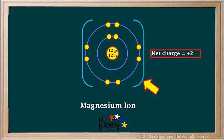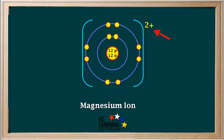When drawing Bohr models for ions, we put square brackets around the ions and write the net charge on the top right of the brackets. So two plus is written here. When writing charges on ions, chemists typically write the number first, then the charge — so here it's written as two plus, rather than plus two.